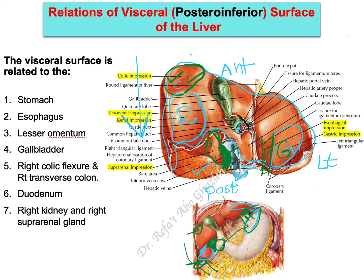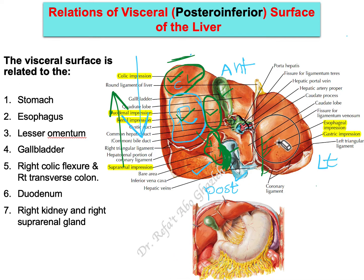Moving medially and anteriorly, you will find the superior part of the duodenum. Moving anteriorly from the suprarenal gland, here is the duodenal impression. An easy way to remember it: the duodenal impression is located between the gallbladder and the renal impression. When the liver is in place, this area lies above the superior part of the duodenum.